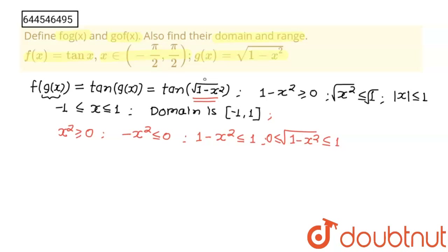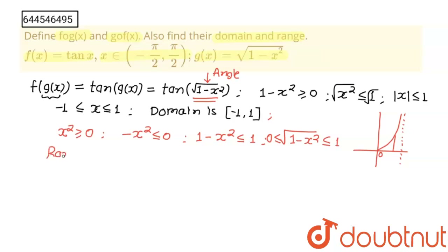This √(1 - x²) plays the role of the angle for tan, and this angle lies between 0 and 1 radians, which is approximately 0 to 57 degrees. Since tan is increasing on (0, 90°), the minimum value of tan is at angle 0, giving tan(0) = 0, and the maximum is at angle 1, giving tan(1). So the range of f(g(x)) is [0, tan(1)].